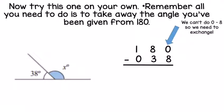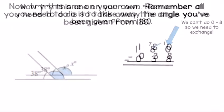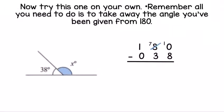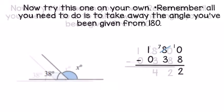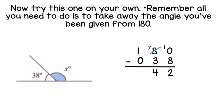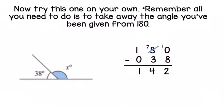Welcome back. For this calculation, the angle you've been given is 38 degrees, so you're doing 180 take away 38. You use column subtraction, laying it out as you can see here. You can't do 0 take away 8, so we need to exchange. Swap the 8 for a 7, carry over the 1 to make 10. Then 10 take away 8 is 2, 7 take away 3 is 4, and 1 take away 0 is 1. Your missing angle is 142 degrees.